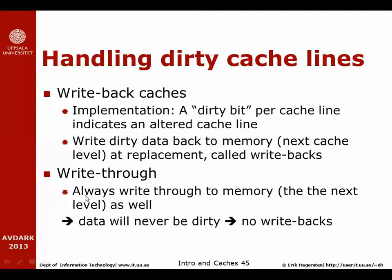In a write-through cache, on the other hand, we always write the information through to memory. Whenever a store is performed to the cache, we also update the memory or the next level in the cache hierarchy right away. That means there will never be dirty data in the cache and we will never perform write-backs. Write-through is a simpler design; write-back is slightly more complicated. Often first-level caches are implemented as write-through because you want very short access times, while write-back typically suits larger caches much better.